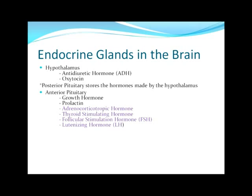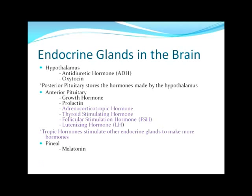Growth hormone stimulates the growth and cell activities of all cells. Prolactin is involved in milk production in women; they have no idea what the target cells are in men. The following four are all tropic hormones. Tropic hormones stimulate other endocrine glands to make more hormones. Adrenocorticotropic hormone stimulates the adrenal cortex to produce hormones; thyroid stimulating hormone stimulates the thyroid gland; follicle stimulating hormone and luteinizing hormone are gonadotropic hormones that stimulate the gonads — ovaries or testes — to produce their hormones.